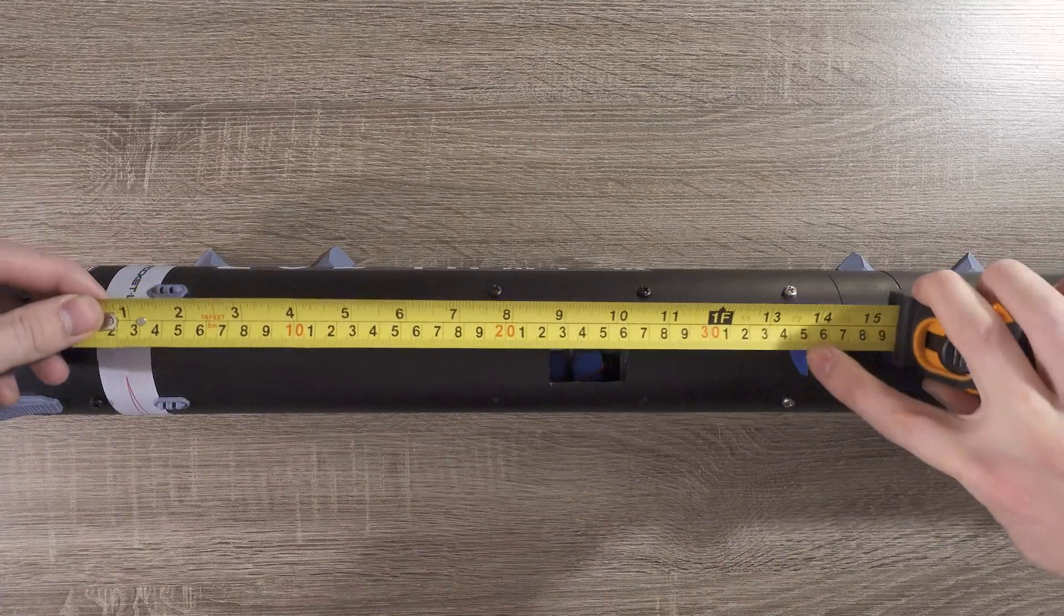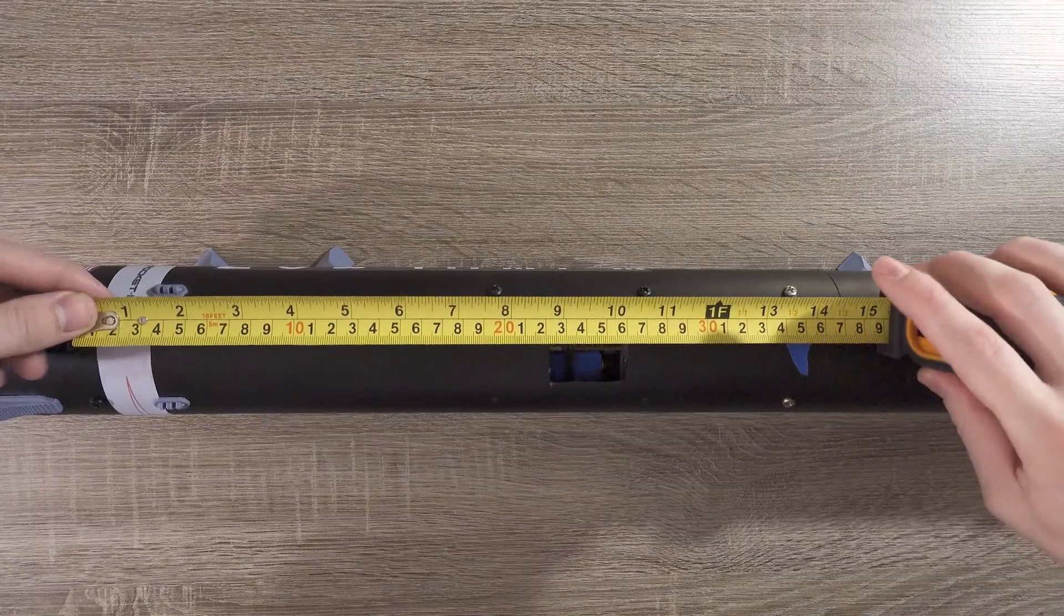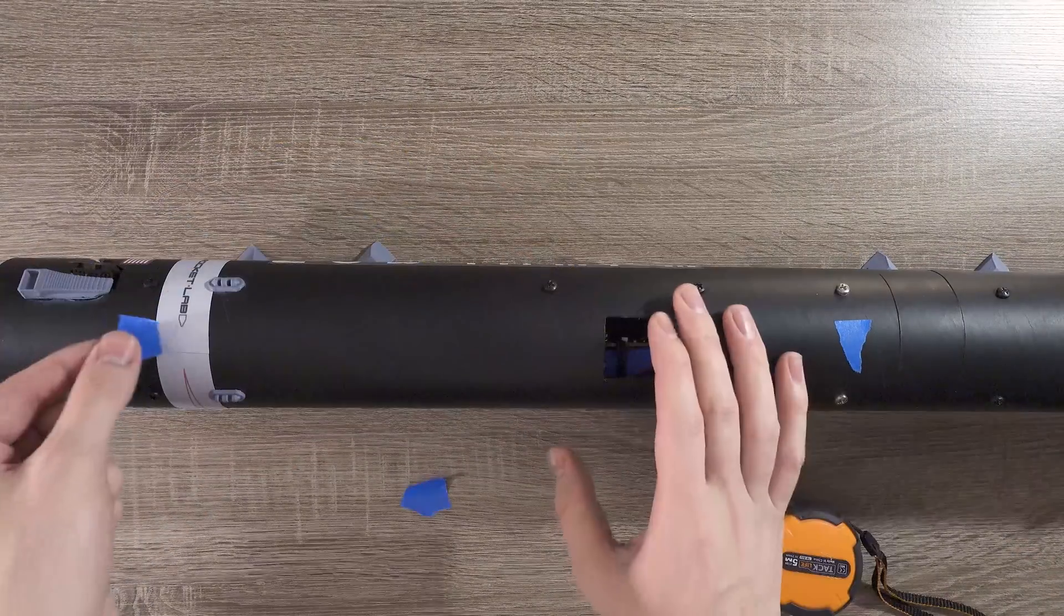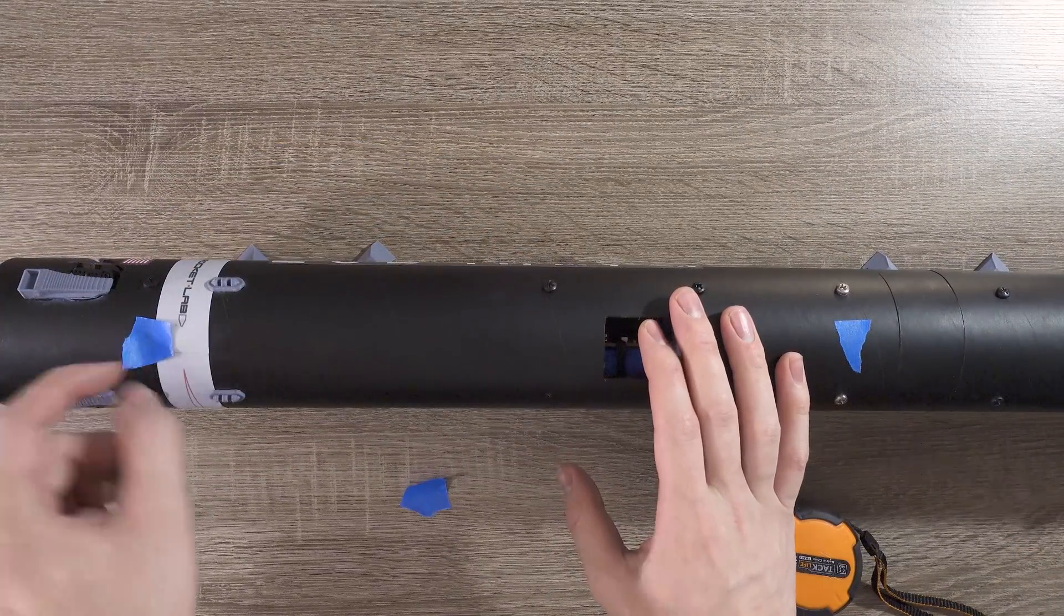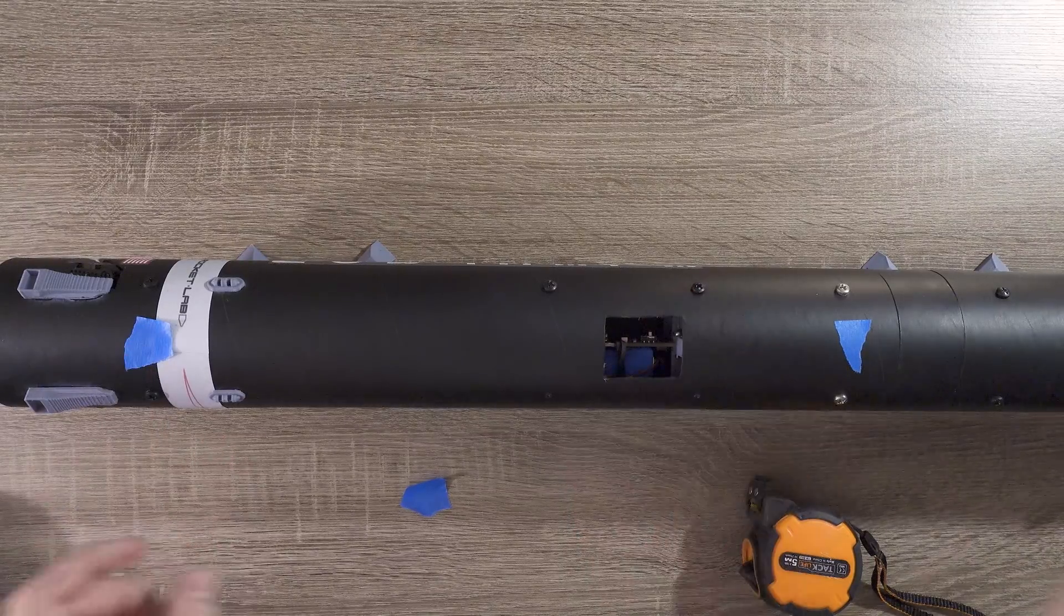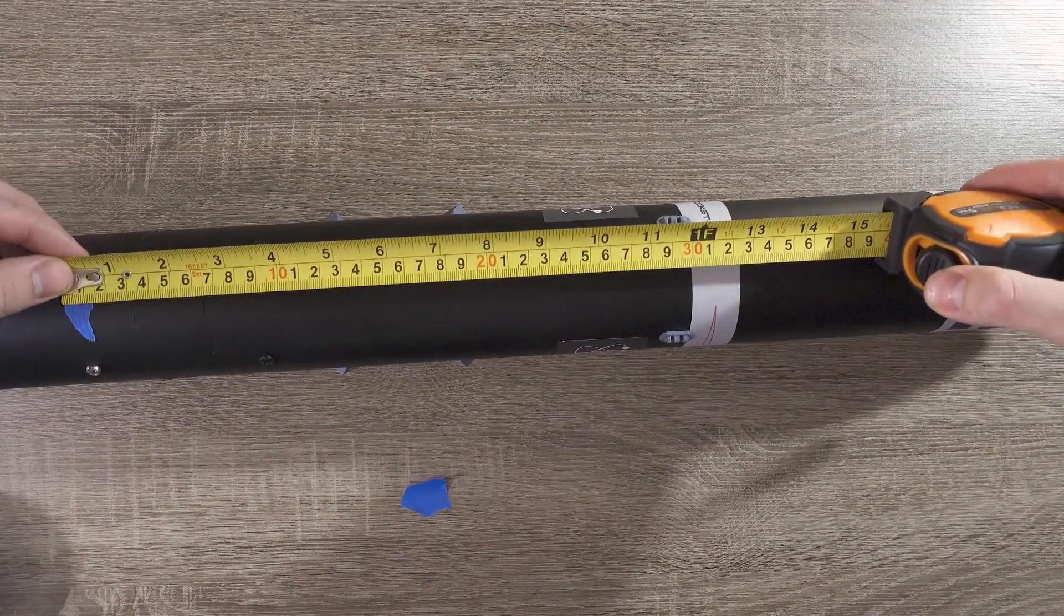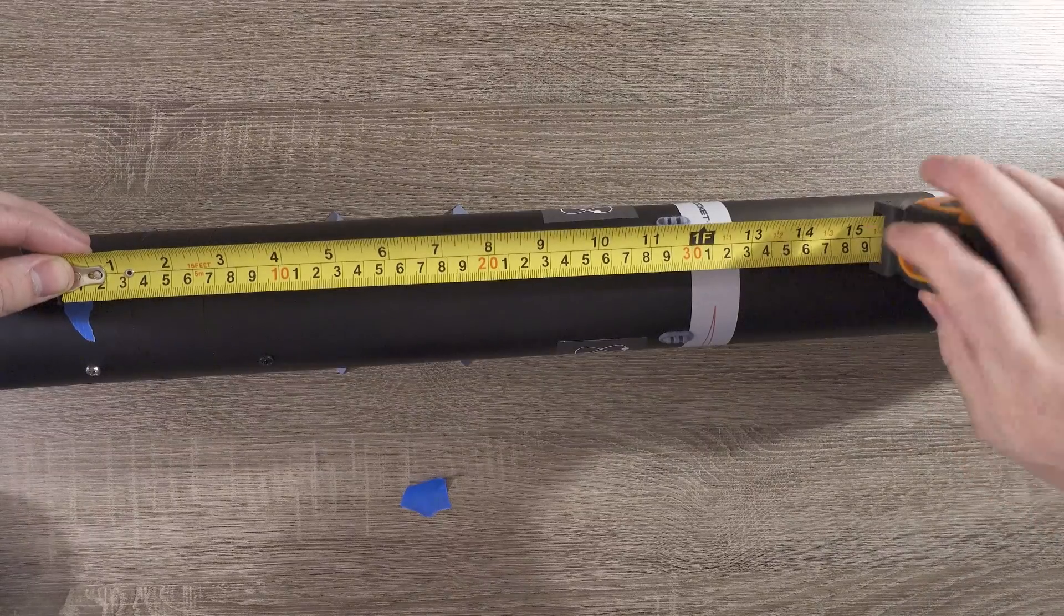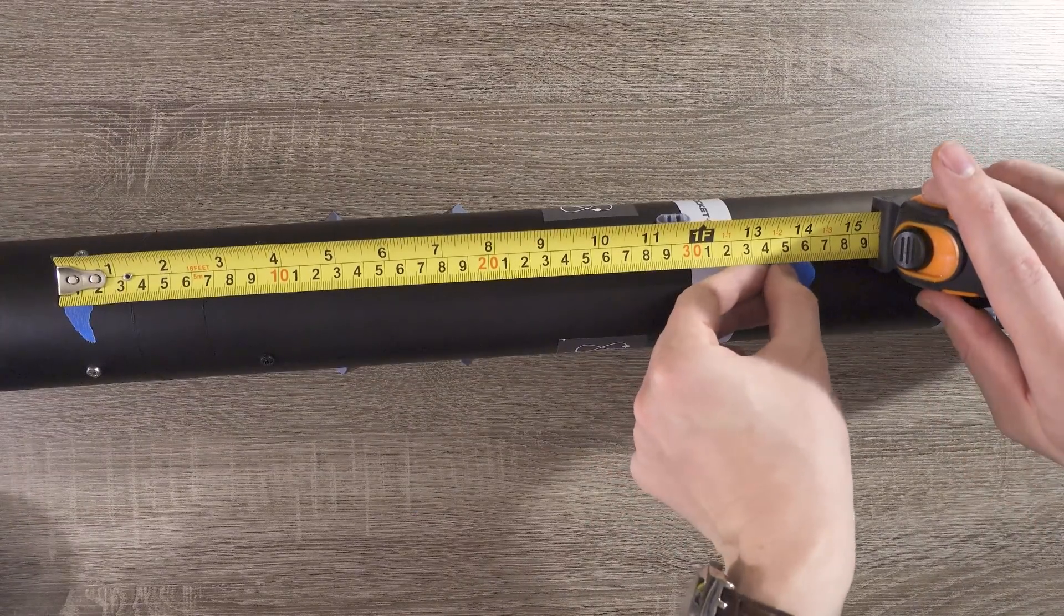We need to create two different points on the rocket that it can hang from, both equidistant from the center of mass. I've chosen to put my points 0.35 meters, or 35 centimeters, away from the center of mass. These don't have to be 35 centimeters for every rocket, but it's best to keep them larger than 15 centimeters.